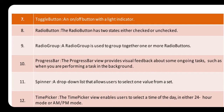RadioGroup is used to group together one or more radio buttons. Then ProgressBar — the ProgressBar view provides visual feedback about some ongoing tasks, such as when you are performing a task in the background.